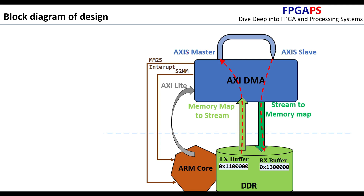The Stream to Memory Map port receives data from the AXI Stream Slave and writes it to DDR memory. Note that both MM2S and S2MM ports are master ports — the DDR is the slave for the AXI DMA, so the DMA can easily read and write to DDR memory. There are also two interrupts related to these two ports.